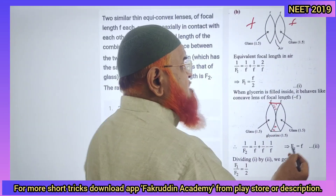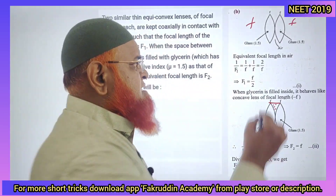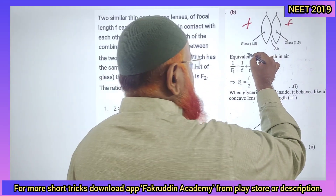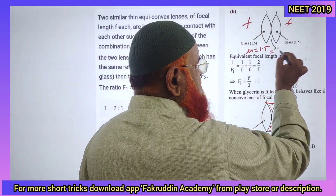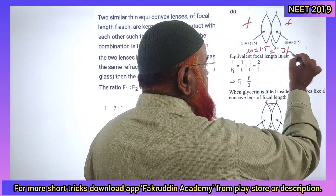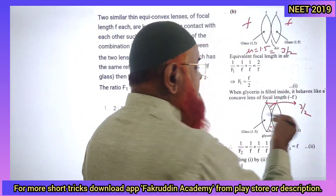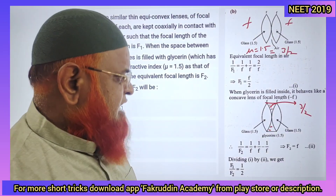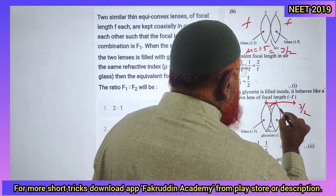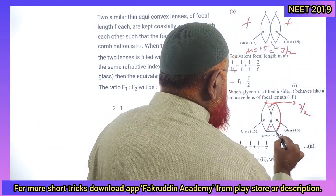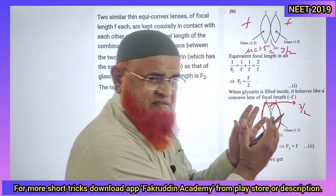This liquid also has the same refractive index. The refractive index of these two lenses is 1.5, that is equal to 3 by 2, and even the refractive index of the liquid in between is also 3 by 2. That means this complete structure is behaving like one lens.